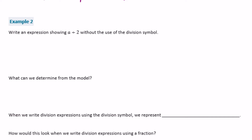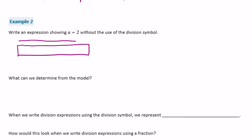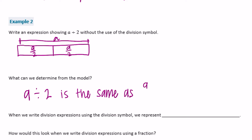Example 2: write an expression showing a divided by 2 without the use of the division symbol. Let's draw a model. This time we don't know what a is — it's just a variable, we don't know how large it is. So with a divided by 2, each section would be a over 2. From the model we can determine that a divided by 2 is the same as a over 2.